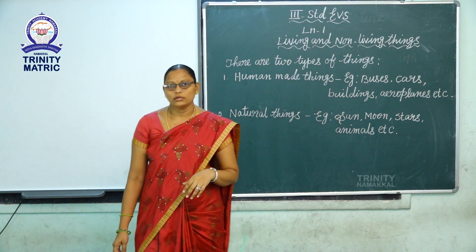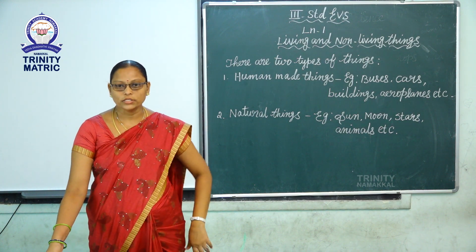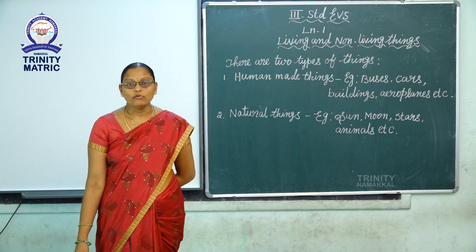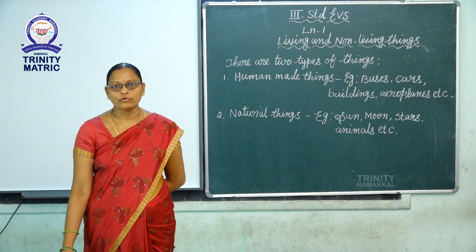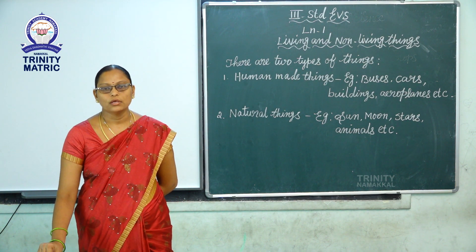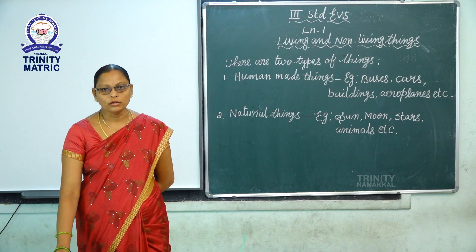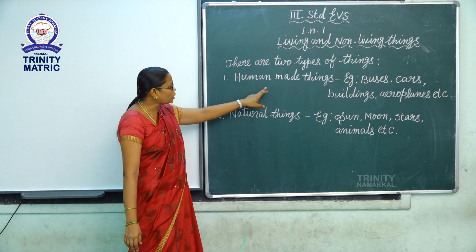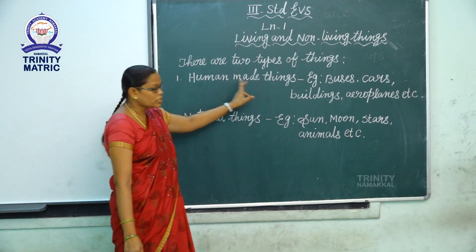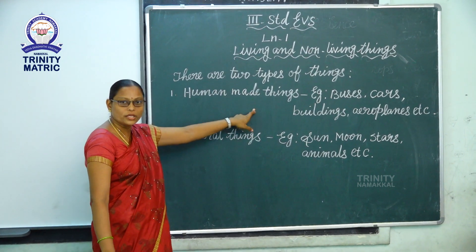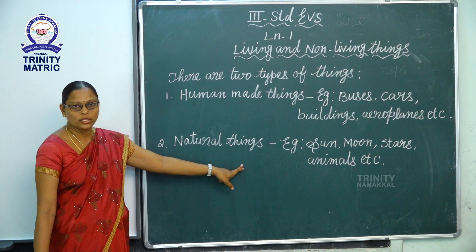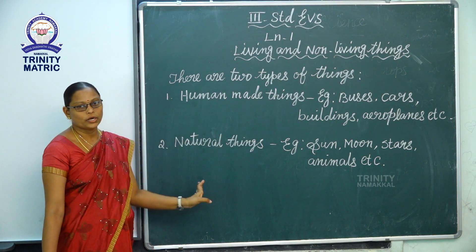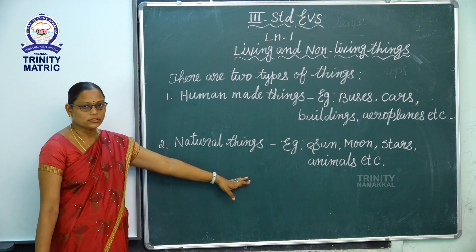Have you ever seen things in your surroundings? Yes, we all see. Then what are the things you have seen in your surroundings? I will tell you — there are two types of things: first, human-made things, and another one is natural things.